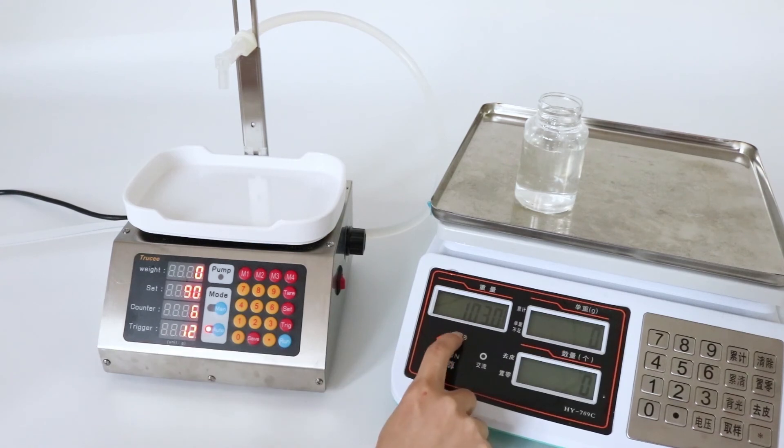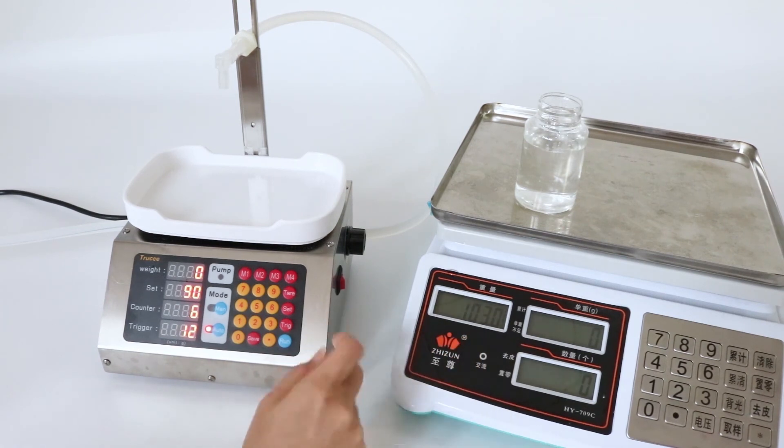Now you can check the total weight is 103 grams. It will have a small error about 1 gram. This machine will have about 3 grams filling error.